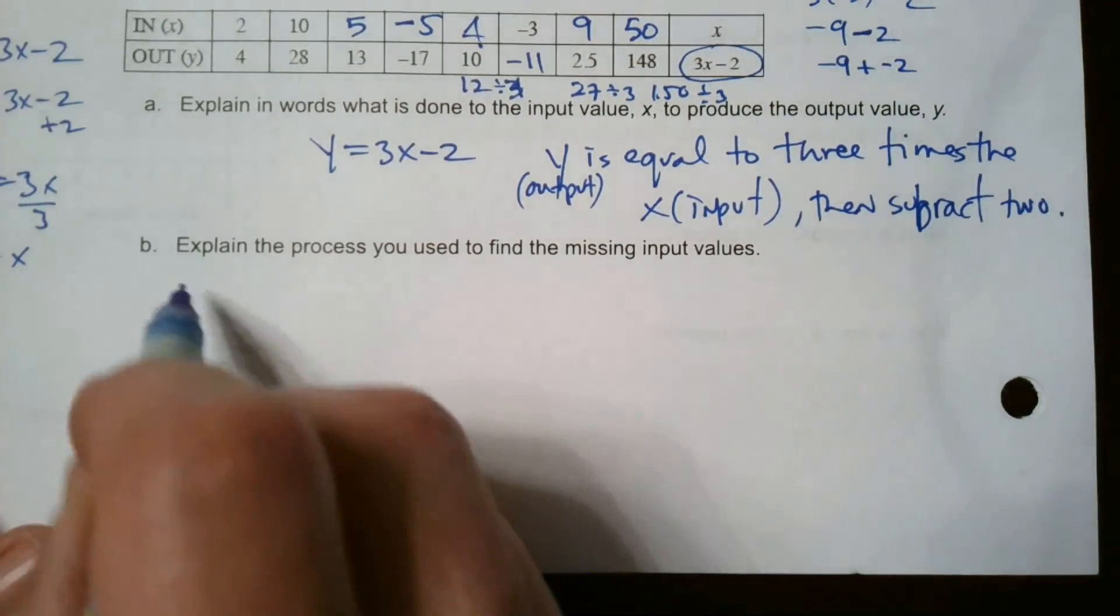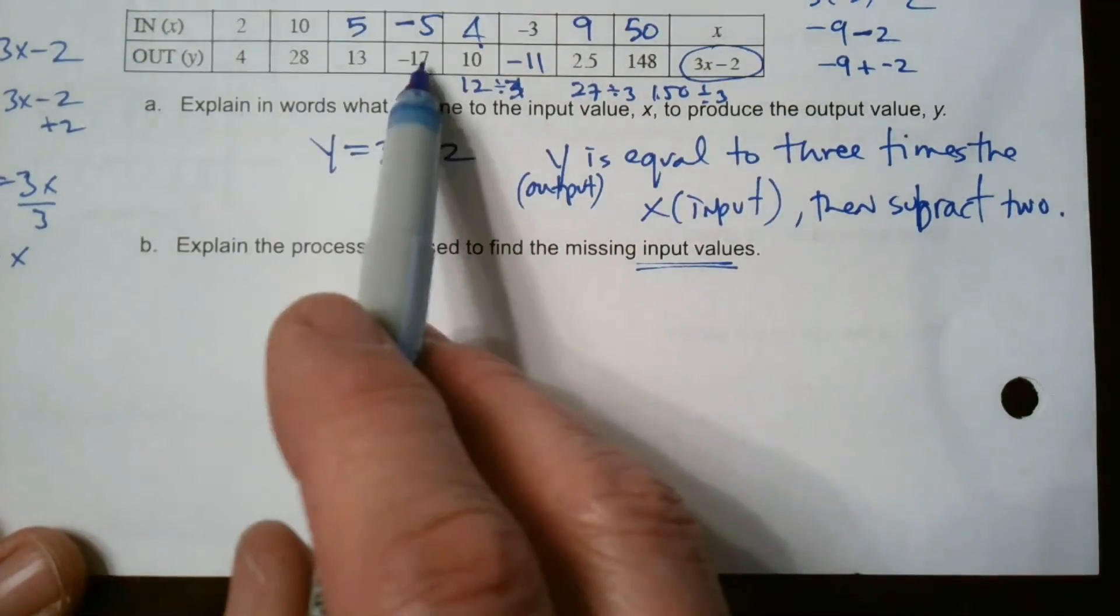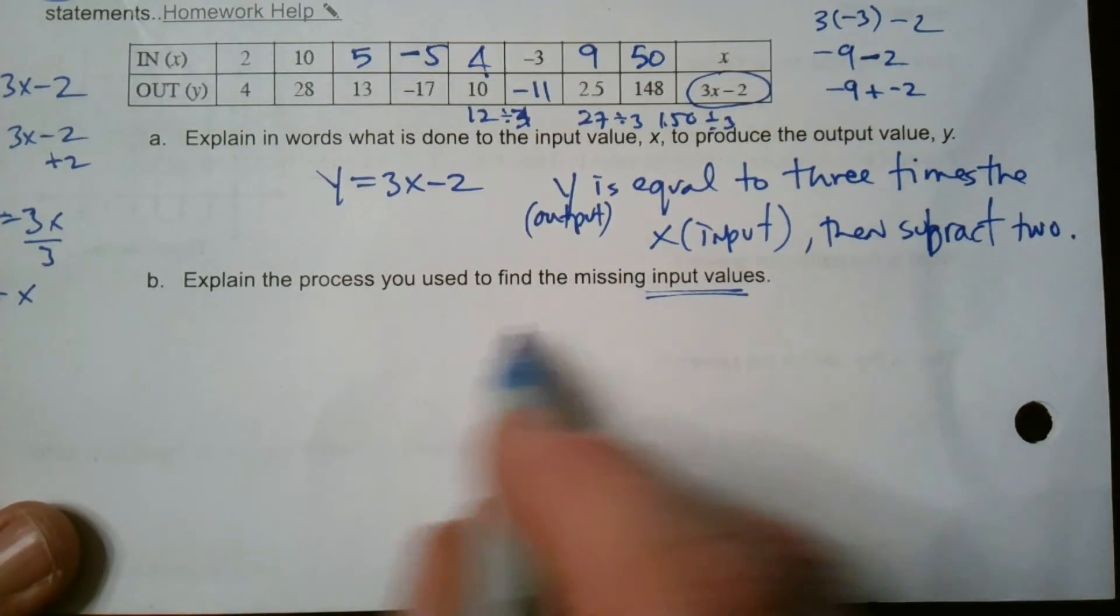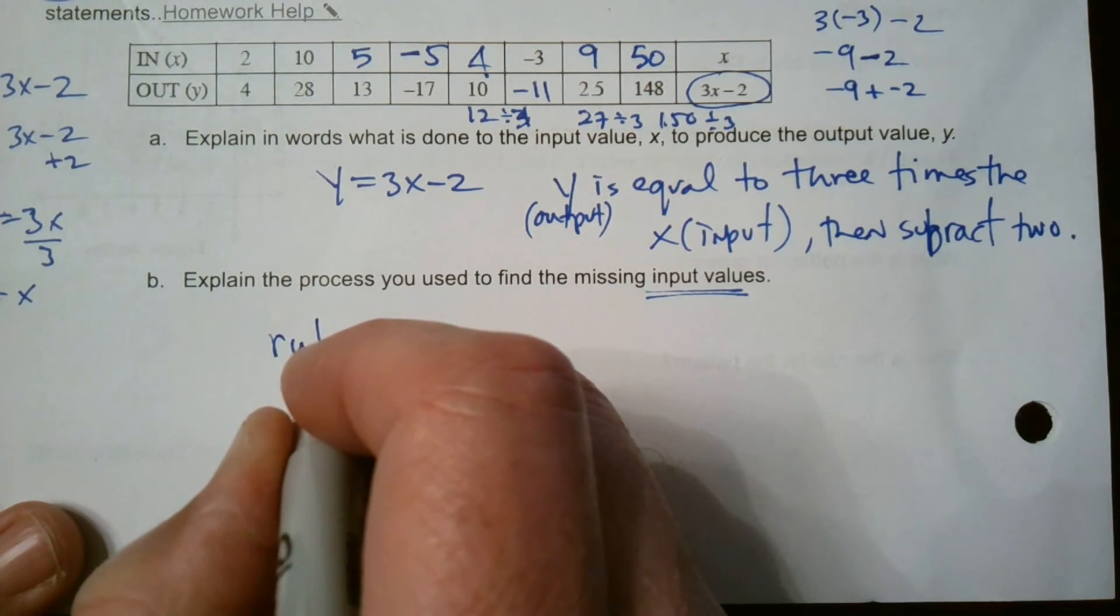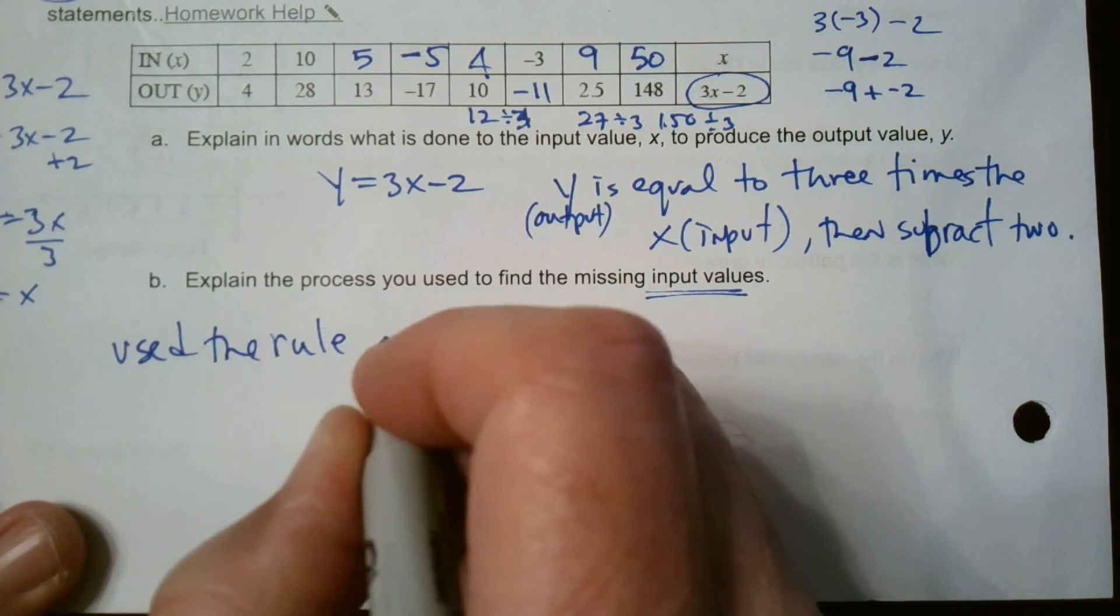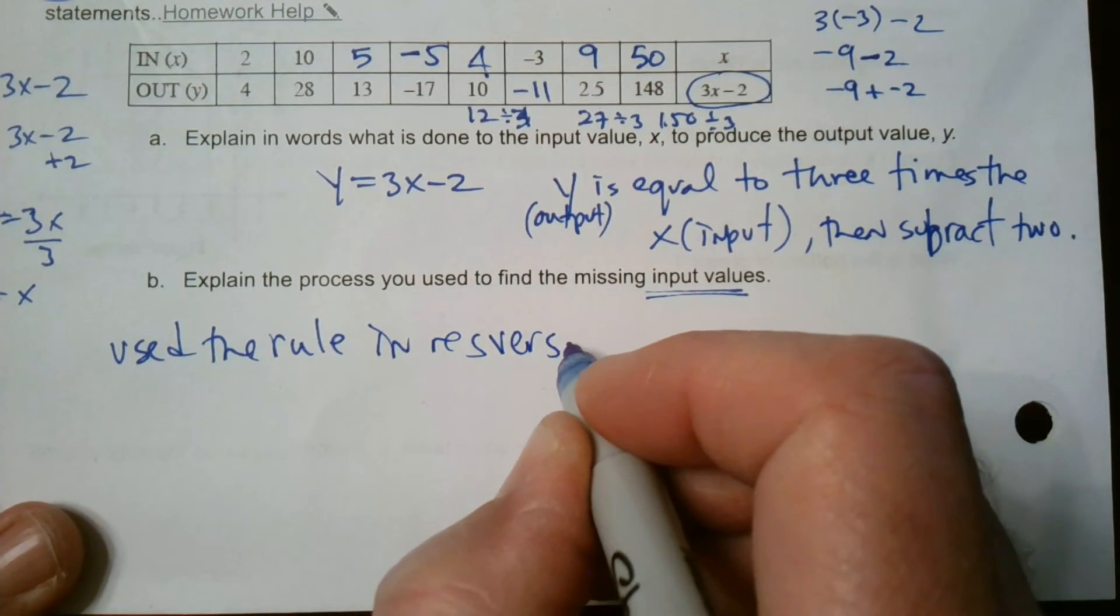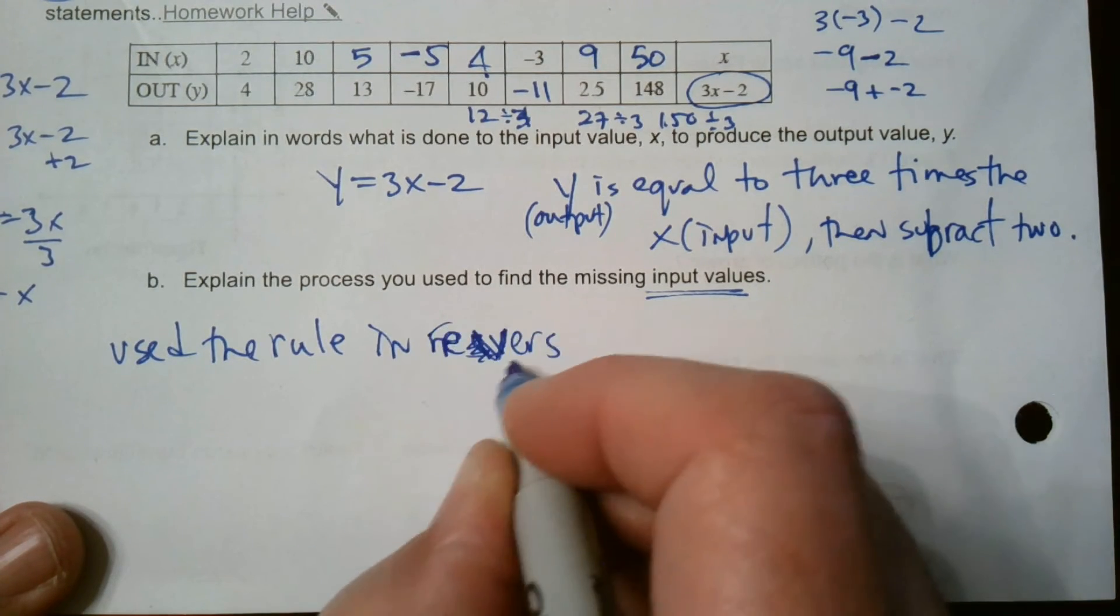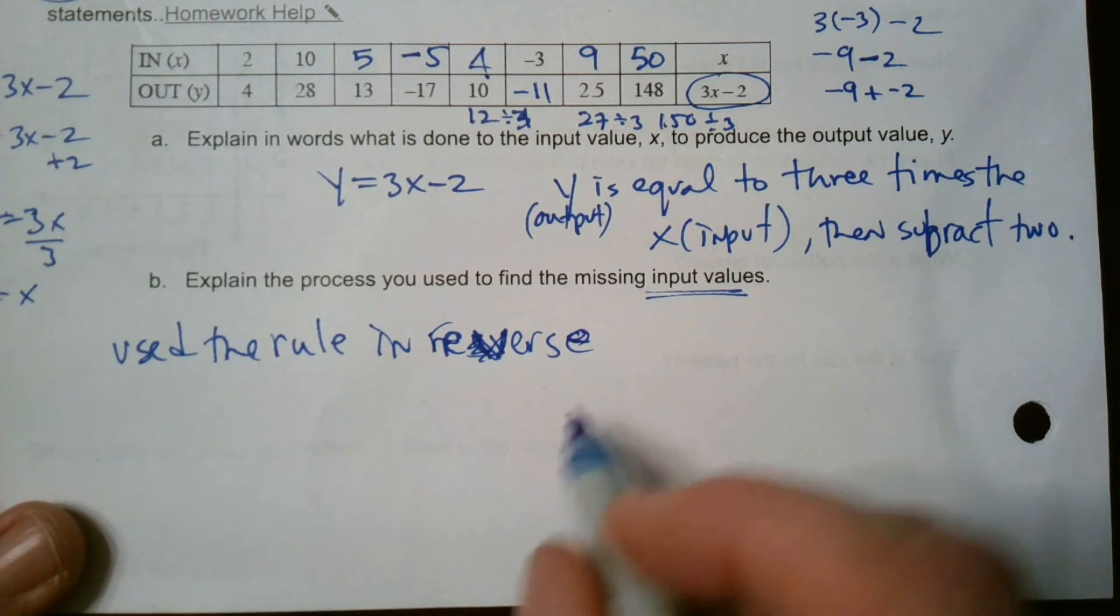Explain part B. Explain the process you used to find the missing input values. So what did we do to find the missing input? We were given these outputs. We had to find the input. So our process was, I'm going to write a couple of things. We used the rule in reverse. Use the rule in reverse.